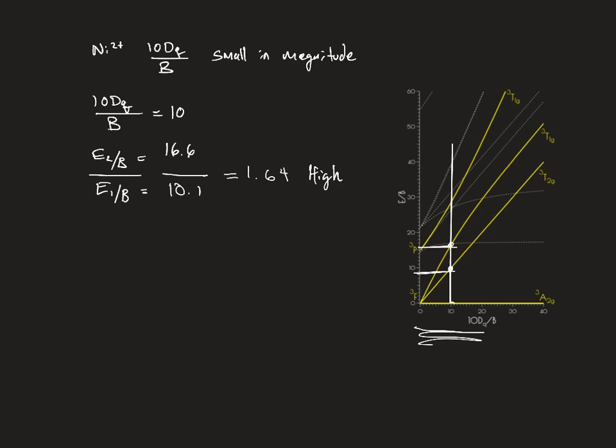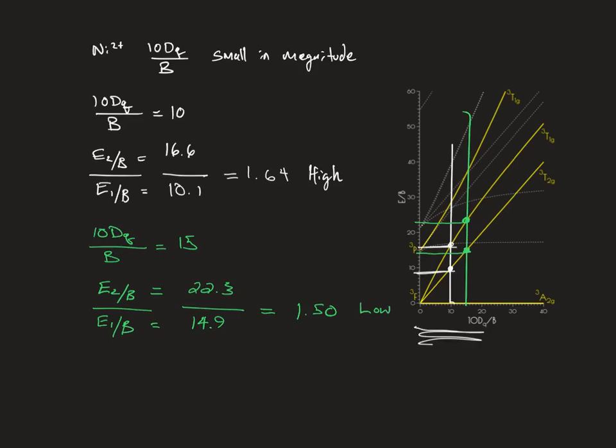Moving to the right, we're going to now guess a value of 15 to not go up too high. We now cross here and here. What this gives us at a 10Dq/B equaling 15 is an E2/B equal to 22.3. We're going to divide that by an E1/B, and at a 10Dq/B of 15, that's equal to 14.9, which that ratio is 1.50, which is too low. So we know that it's somewhere in between a 10Dq/B of 10 and 15.